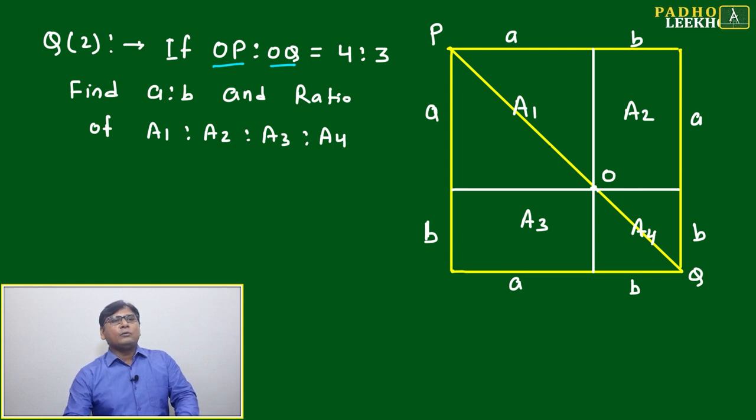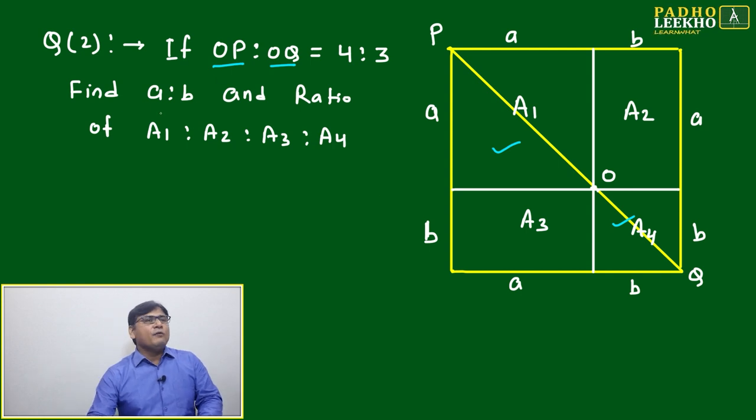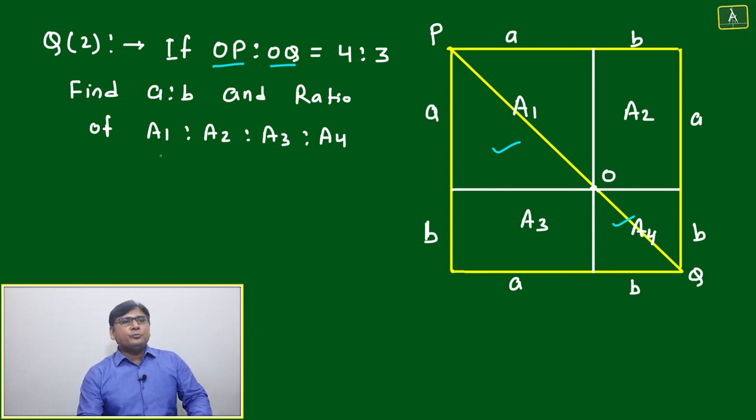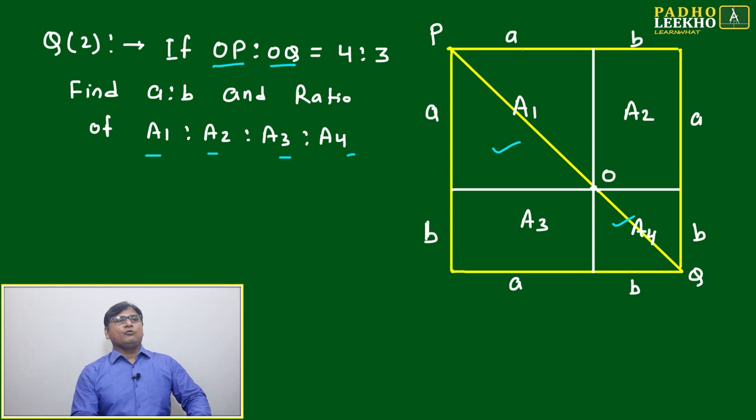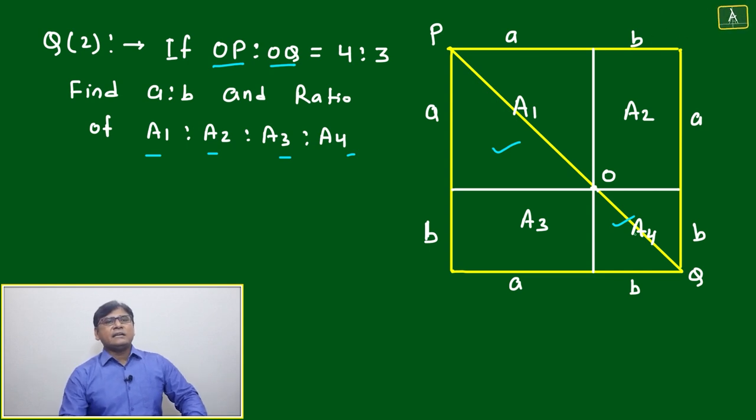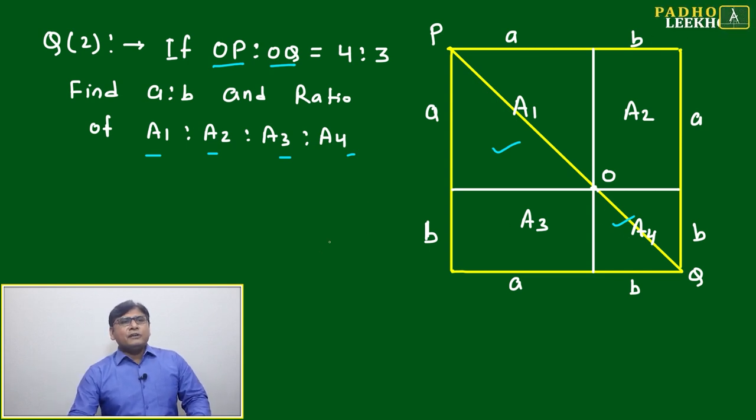The ratio OP and OQ - what is OP and OQ? That is the diagonal of this square and this is a square. The ratio is 4:3. Find the ratio a:b and ratio of A1:A2:A3:A4. What is a and b? a is this side and b is this side.